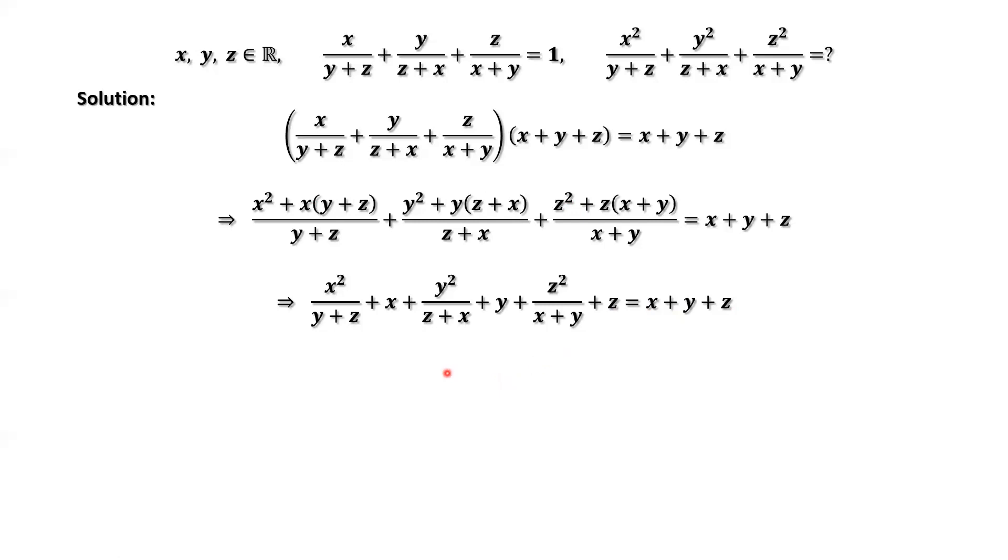Therefore, we have x squared over y plus z, plus y squared over z plus x, plus z squared over x plus y equals zero. That's all. Thanks for watching, and see you next time.